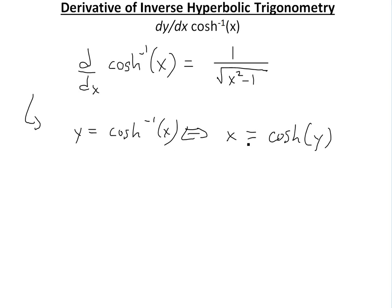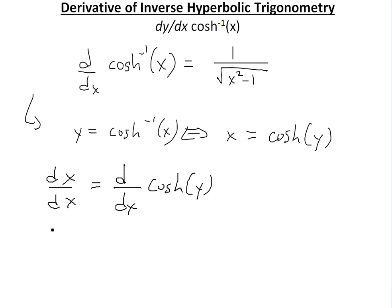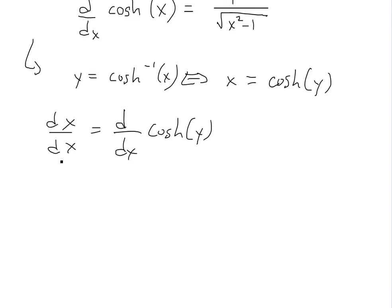Now what we can do is solve the derivative using implicit differentiation — take the derivative of the left and right sides. Since both sides are equal, taking the derivative of both should remain equal. The derivative of the left side, d/dx of x, is just 1.